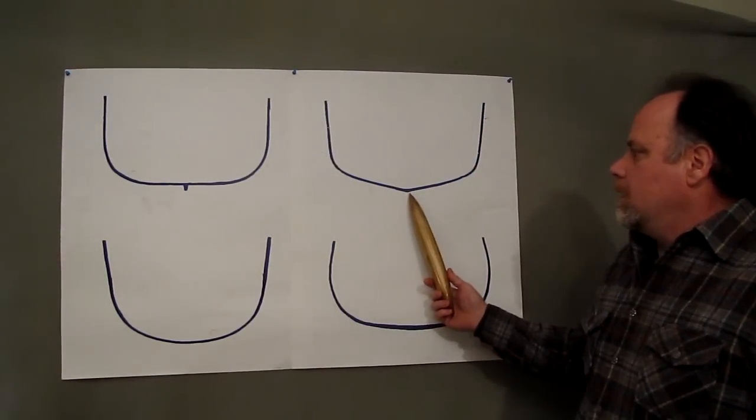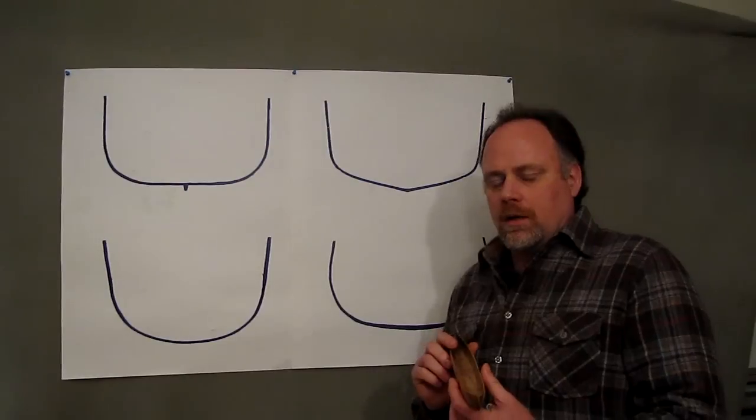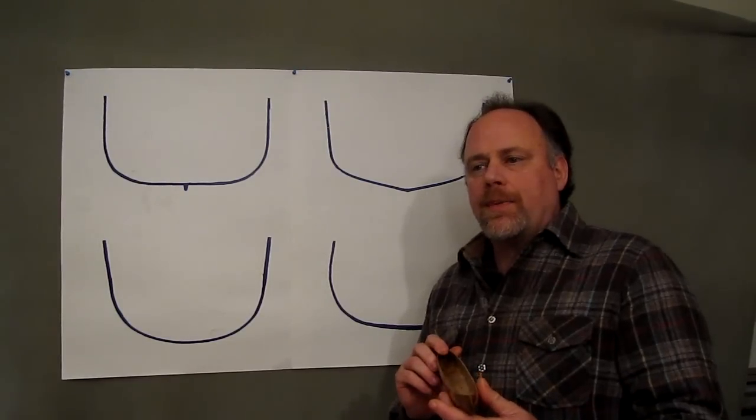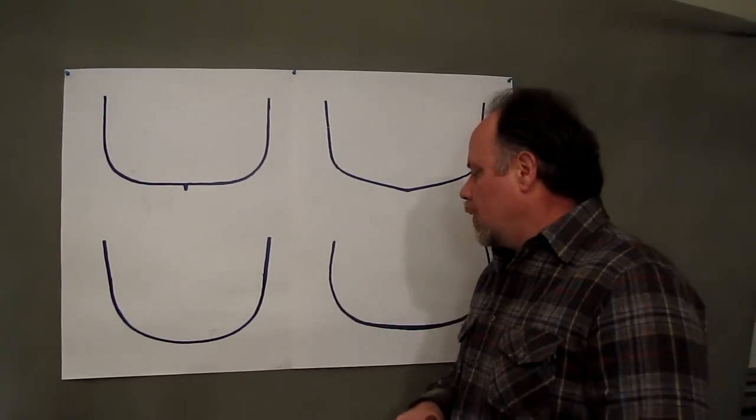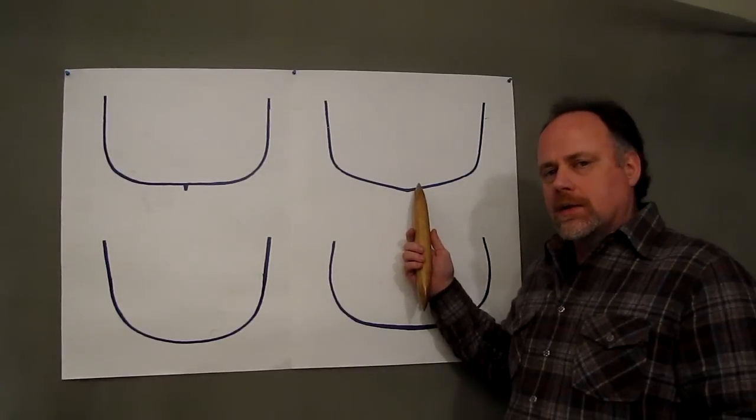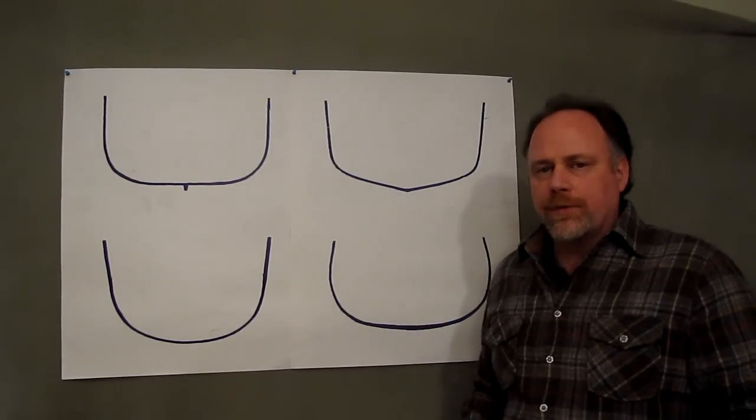In the shallow V, that V acts somewhat like a keel in giving you tracking ability, but what you're giving up is maneuverability. It's not going to turn quite as easily. Whereas in the shallow arch, it won't track quite as well as the V bottom boat, but it will be more maneuverable.